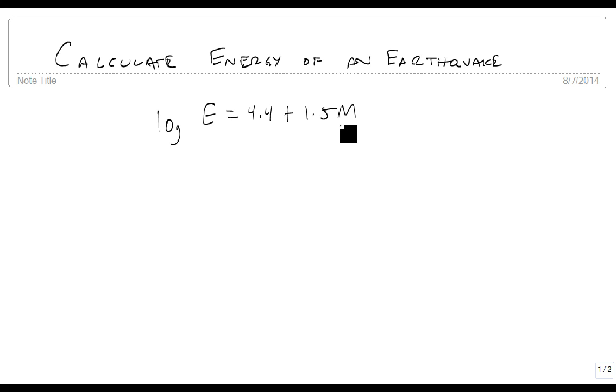So we want to get rid of the E, so we raise 10 to the everything, and that gives me E equals 10 to the 4.4 plus 1.5M, which is going to be equal to 10 to the 0.4 times 10 to the 4 times 10 to the 1.5M. I'm taking advantage of the fact that this is 4 plus 0.4 plus 1.5M, and breaking it into three separate powers of 10.